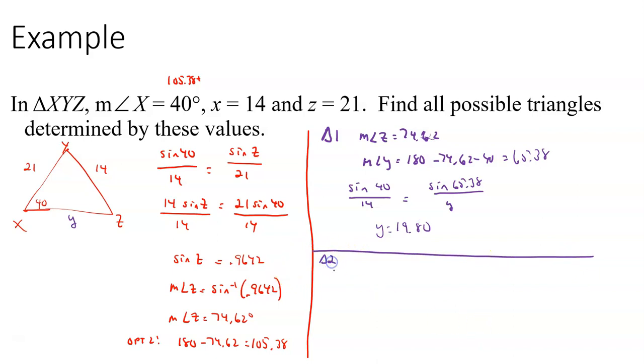All right. For triangle two. Now we get to use the other option here. So the measure of angle Z is 105.38, which means the measure of angle Y is 180 minus 105.38 minus the 40 that was given. So let's do 180 minus 105.38 minus 40. And that gives me 34.62. So that's the other option for the measure of angle Y. That's what happens if it's a smaller angle.